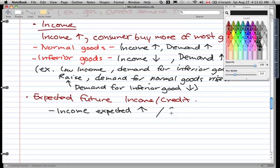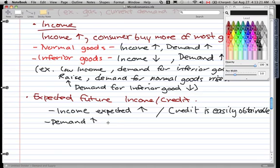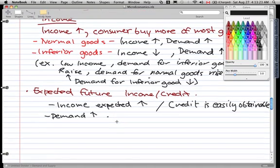When our income is expected to rise or our credit is easily obtainable, the demand will go up. So the demand curve shifts right.